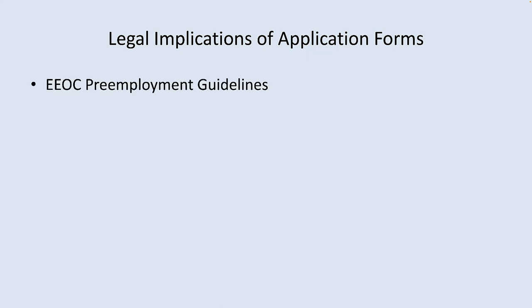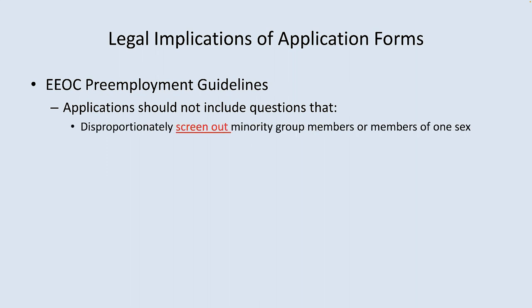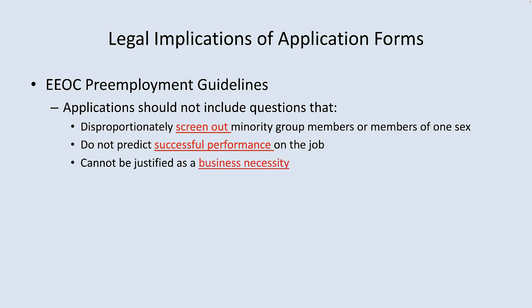As you might suspect, there are numerous legal implications regarding application forms. The EEOC pre-employment guidelines state that applications should not include questions that disproportionately screen out minority group members or members of one sex, that do not predict performance on the job, and that cannot be justified as a business necessity. I cannot stress enough what a horrid job some companies do — cover your butts and do it right.